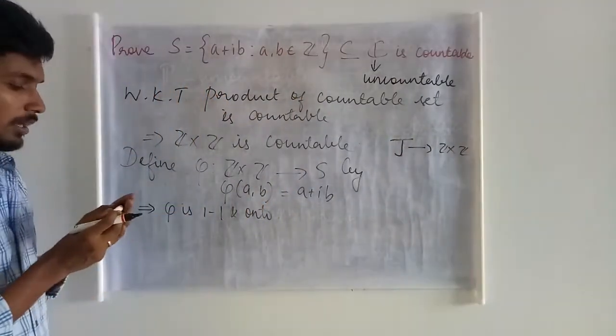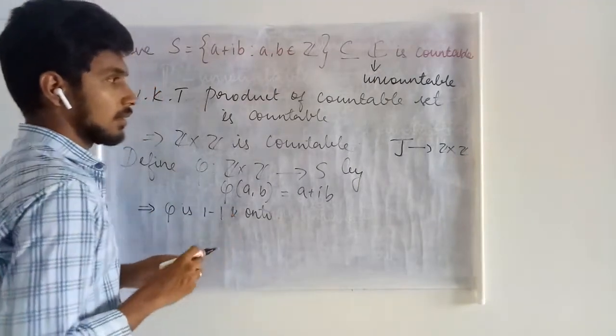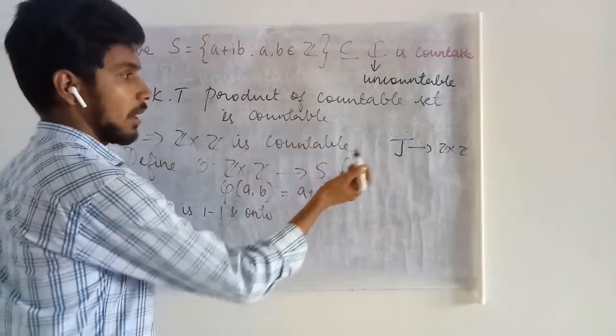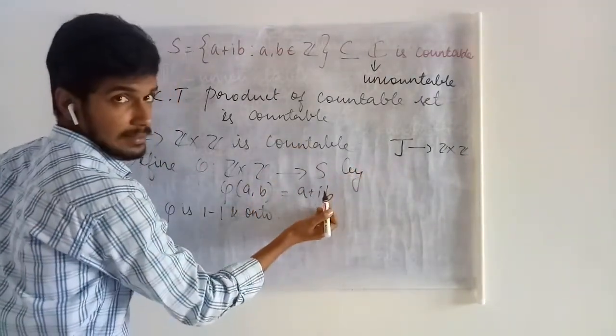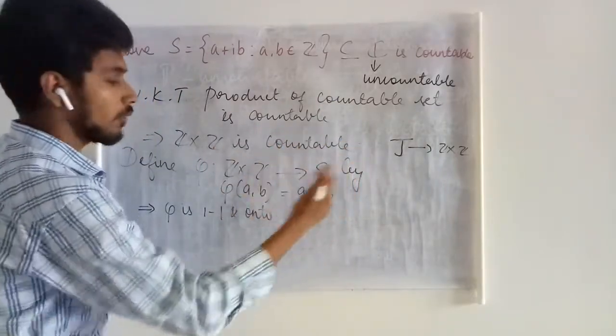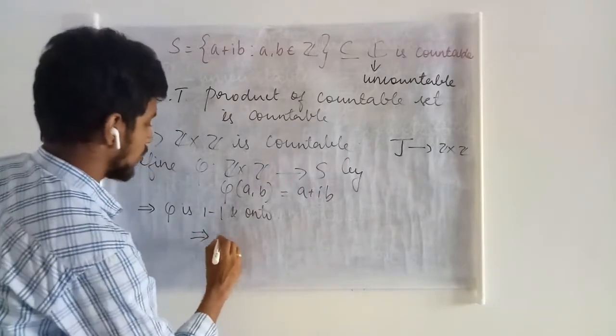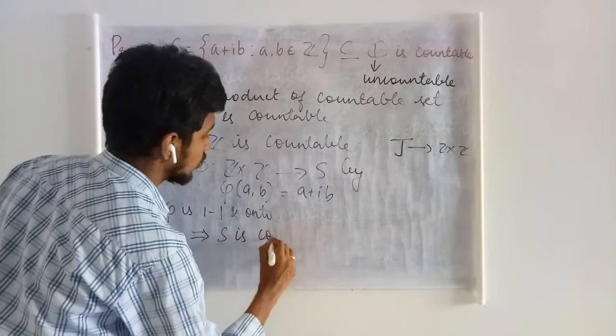So when you make the composition of these two mappings, you can see that you can establish a mapping from J to S. Therefore, that mapping turns to be 1-1 and onto. Hence, what we have is S is countable.